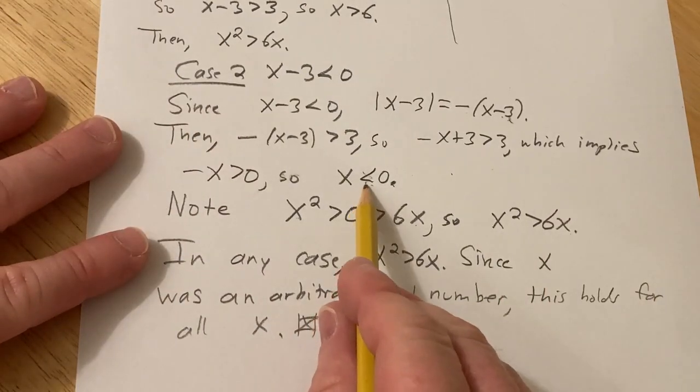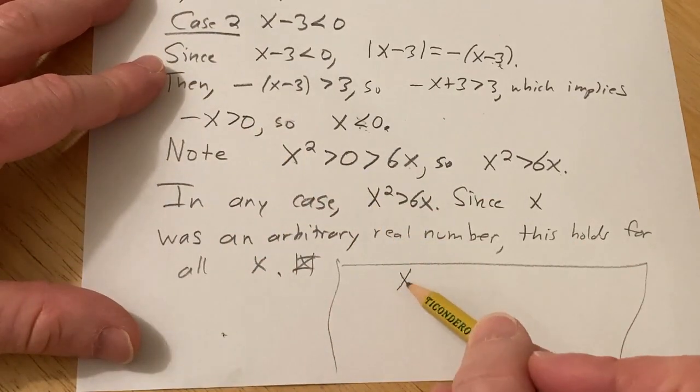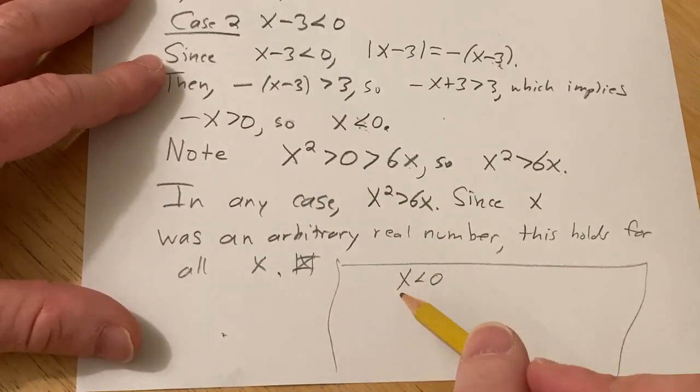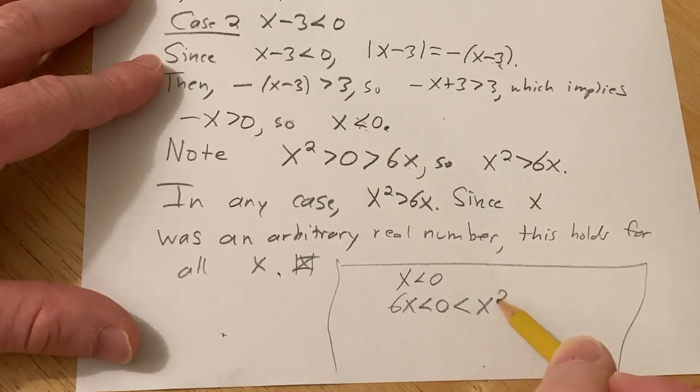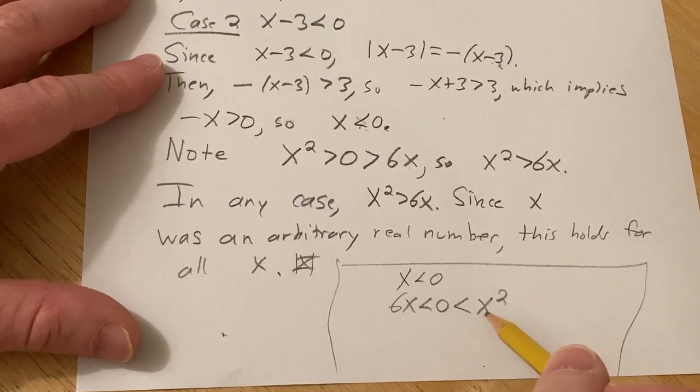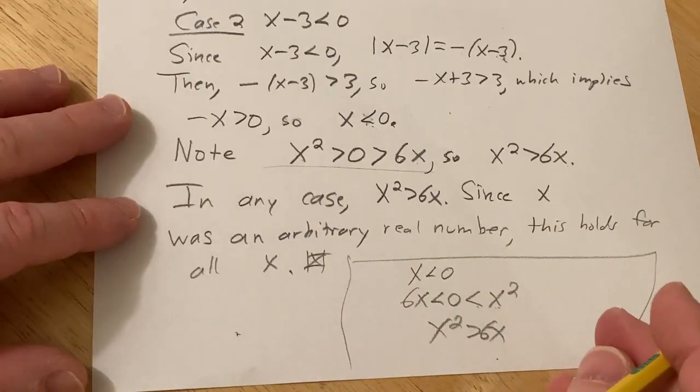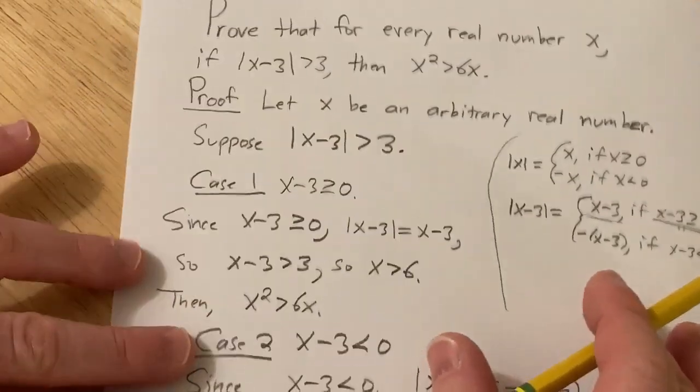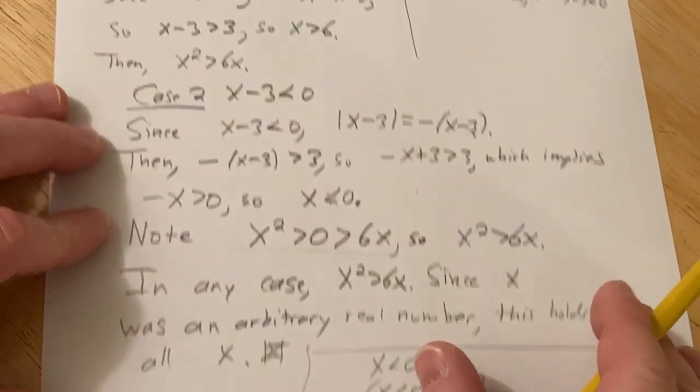So not too bad. There's probably other ways to show this part here. Let's just think about it for a moment, like if that wasn't clear. If you have x less than 0, you could easily multiply by 6. Then you get 6x less than 0. And 0 is less than x squared, because x squared is a positive number. So reading that backwards, x squared is bigger than 6x. So a couple different ways to arrive at the same conclusion. This is just what came to mind. So kind of a nice problem. And yeah, I hope this is helping someone out there who is trying to learn proofs. Good luck to you.